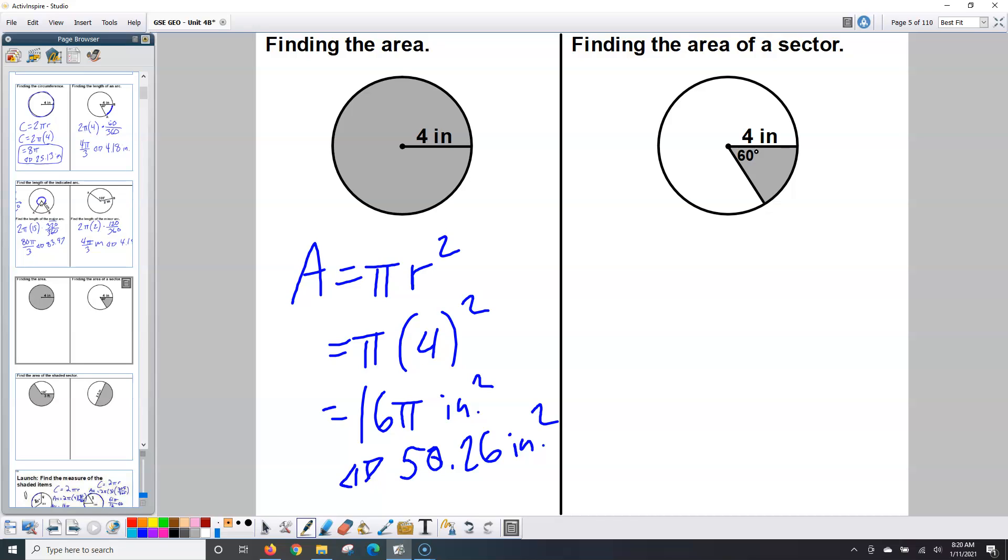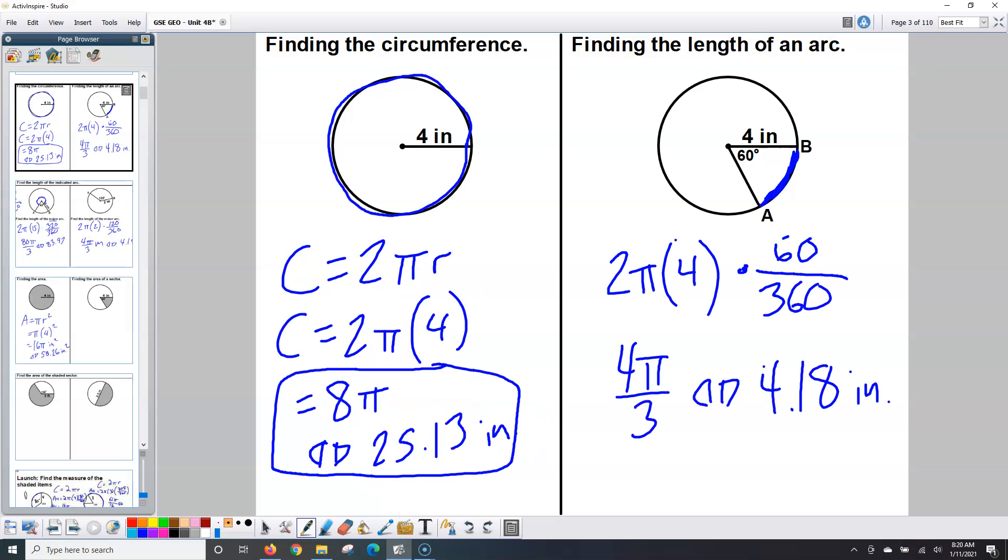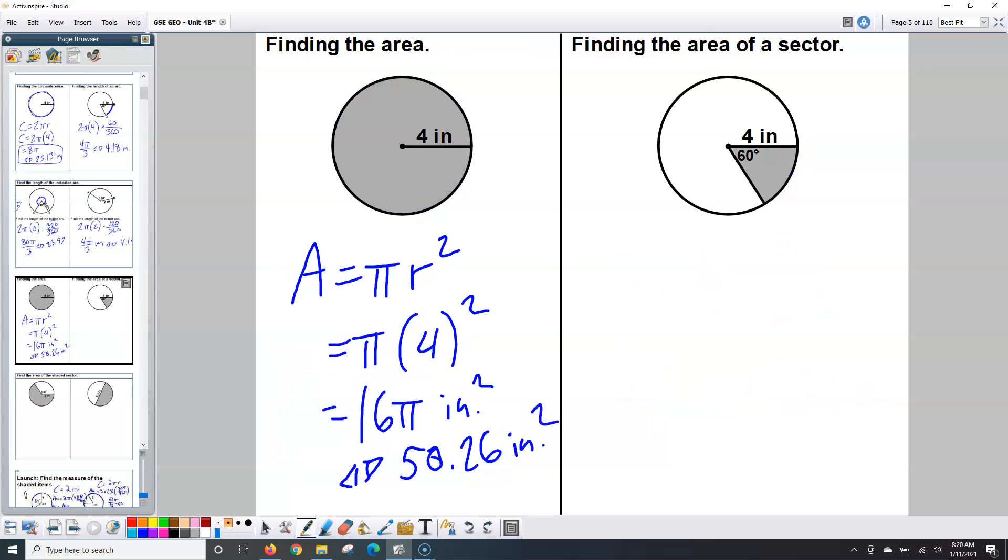Sometimes they'll ask you for your answer in terms of pi, sometimes as a decimal. Find the area of the sector. Same kind of logic as this one on the right side. I only want a fraction of the circle, so I want a fraction of the area, so I'm going to use the πr² formula.